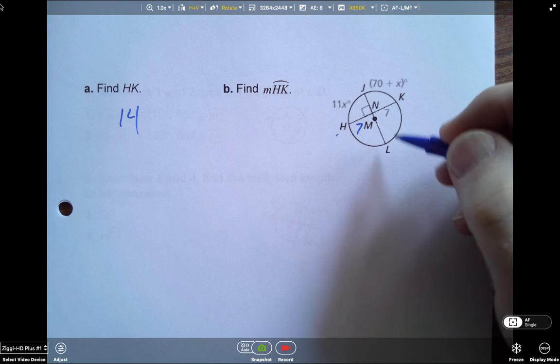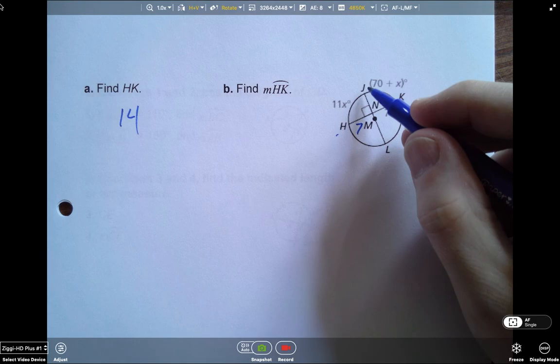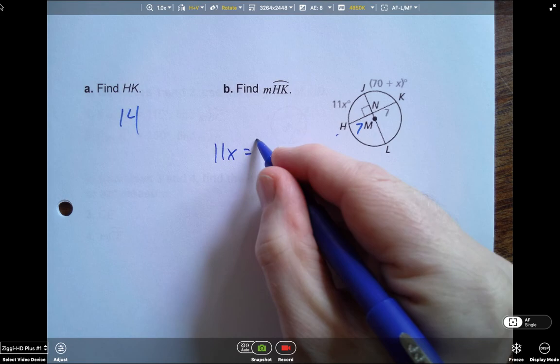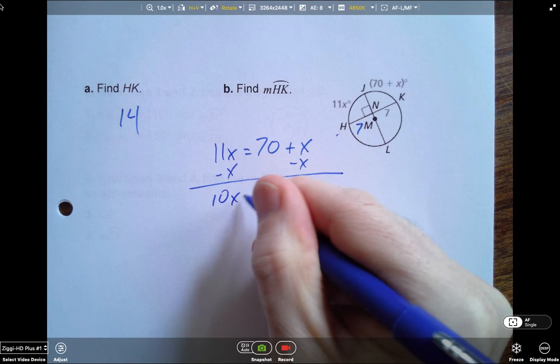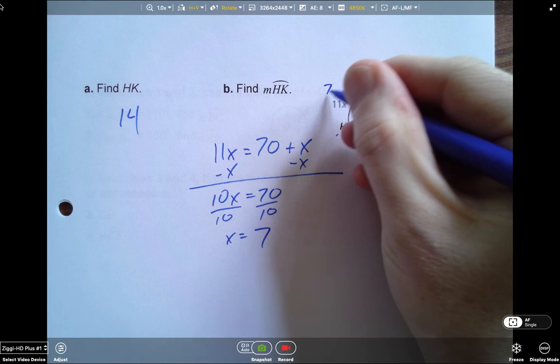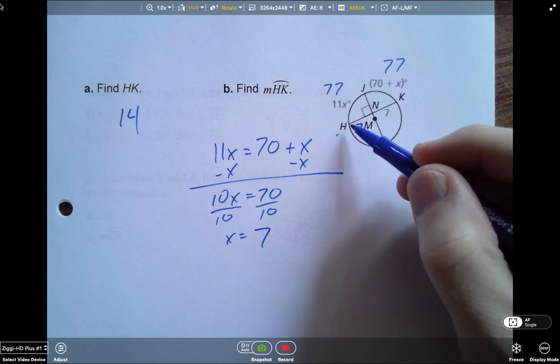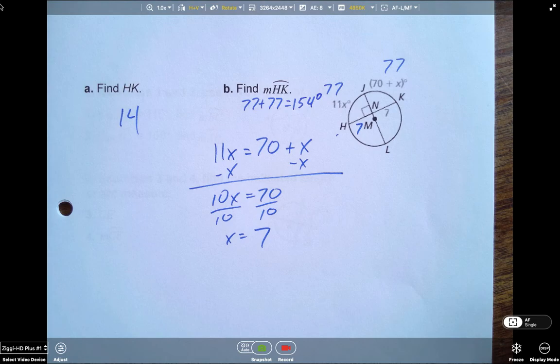Now, arc HK. Well, we know that since this is a diameter and it's perpendicular to this chord, that it bisects this arc. Or in other words, the measure of HJ is equal to the measure of JK. So I can say 11X equals 70 plus X. So now we just do some algebra to solve for X. Subtract an X from both sides. That gives us 10X equals 70, divide by 10, and X equals 7. So 11 times 7, 77. 70 plus 7, 77. So if I want to find the measure of arc HK, that would be 77 plus 77, which is 154.